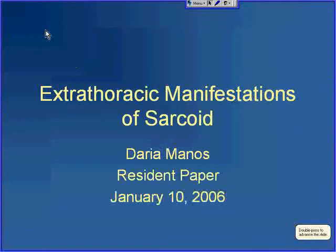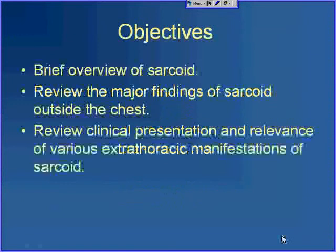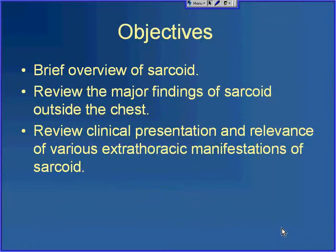I'm going to talk briefly today on extrasplastic manifestations of sarcoid. I'll briefly review the major clinical findings in sarcoid and review the major findings of sarcoid outside the chest — outside the lungs, the lymph nodes, and outside the heart — and review the clinical presentation and relevance of various extrathoracic manifestations of sarcoid.